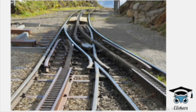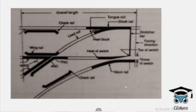We have to go to the top of this section called the Tongue Rail. When we go to the main train, we have to go to the main train. Here we have to go to the Tongue Rail. This is the Tongue Rail. If you join the Tongue Rail, that is the point.